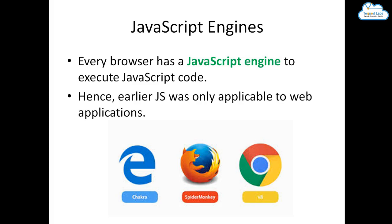Earlier, JavaScript was used only in web-based applications — it could not be used anywhere else. Every browser has its own JavaScript engine: Internet Explorer has Chakra, Mozilla Firefox has Spider Monkey, and Chrome has the most famous V8 engine. The V8 engine is a JavaScript engine used to run JavaScript code inside the browser. Your browser is like a total compiler that can compile different front-end and back-end languages, load them, and display them to you.